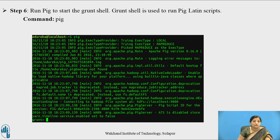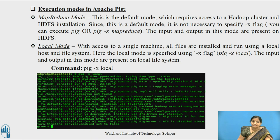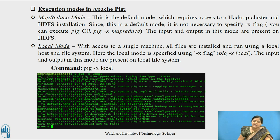Pig runs in two modes: MapReduce mode and local mode. MapReduce mode is the default mode, which requires access to a Hadoop cluster and HDFS installation. It is not necessary to specify the -x flag; you can execute just pig or pig -x mapreduce. The input and output in this mode are on HDFS. In local mode, all files are installed and run using a local host and file system, specified using the -x flag: pig -x local.